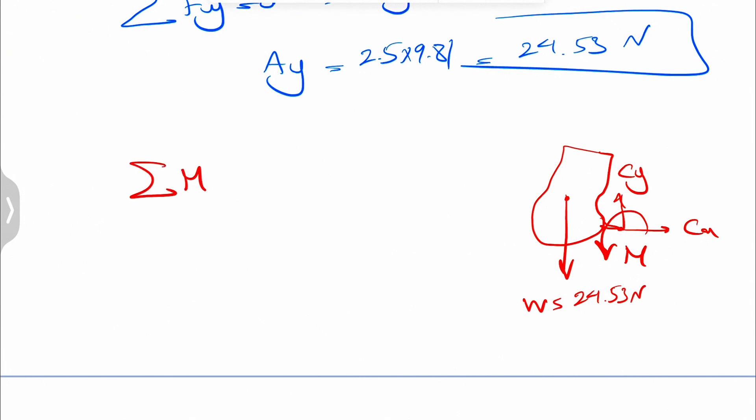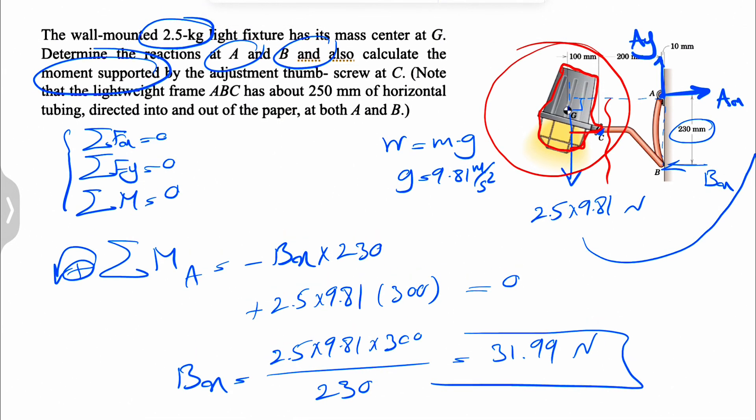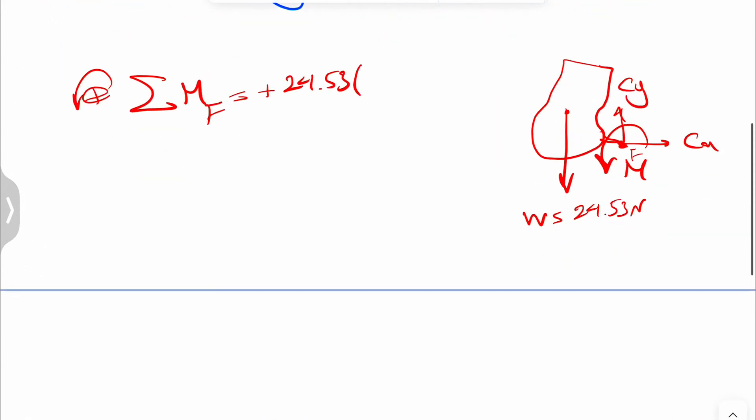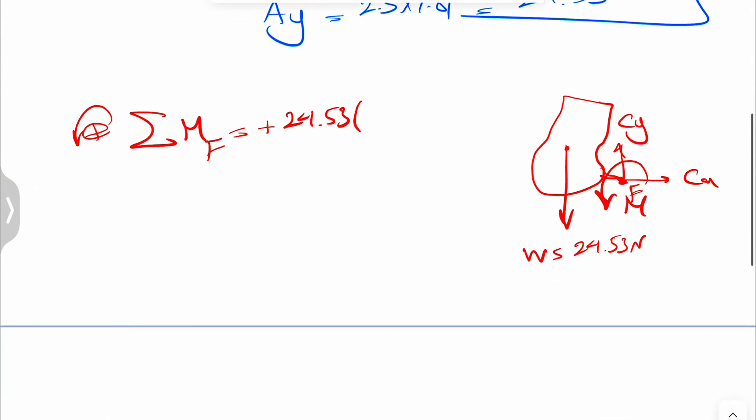And for finding the M here, you just have to find the moment about point, let's call this point maybe F. Counterclockwise positive as always. And here we're going to have the moment of the weight about that point, which is also counterclockwise. So plus 24.53 times the distance from F to the line of action of the W or weight. Actually, this F in here is our C. So it really doesn't matter whatever name that we wanted to assume. And that distance, if we look at the figure, we'll see that it's 100 millimeter.